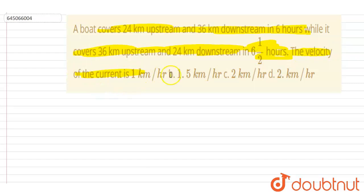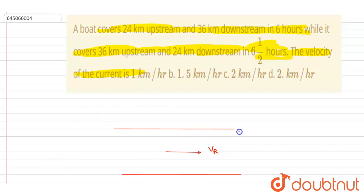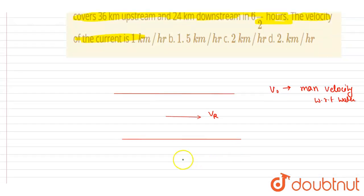Let's say the river is flowing with velocity vr. A man has velocity v-naught with respect to water. In the downstream direction, both velocities are in the same direction, so the downstream velocity will be vr plus v-naught. Upstream velocity will be v-naught minus vr.